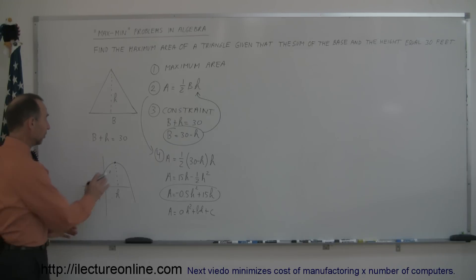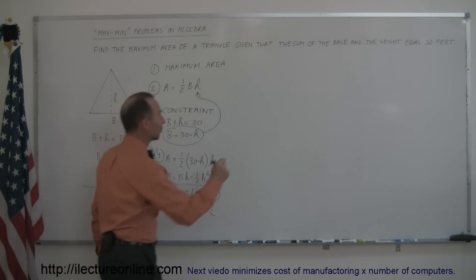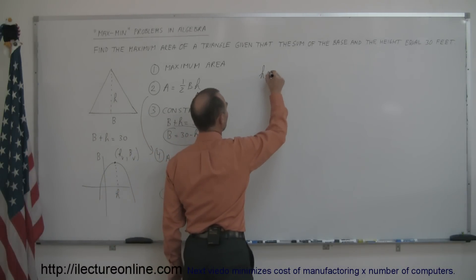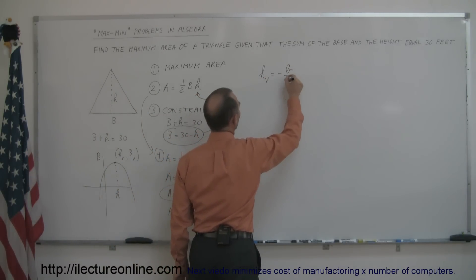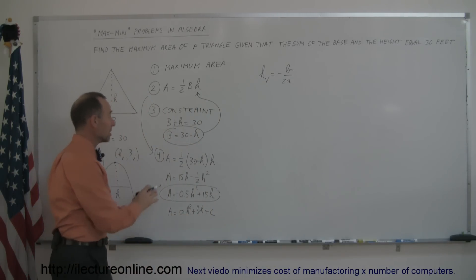And since this is the vertex of the parabola, we know that h sub v, and then of course the other axis would be b, that would be the base, b sub v, the h sub v can be found as follows: h sub v is equal to minus b over 2a. That's the way in which you find the vertex of the independent variable.